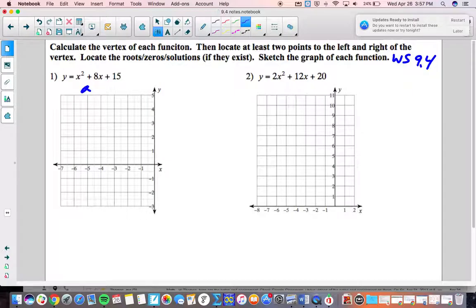Before we calculate our vertex it wouldn't hurt to identify your a, b, and c values. That's your coefficients of x squared, your coefficient of x, and your constant. So a is 1 because there's an invisible 1 right there, b is 8, and c is 15.